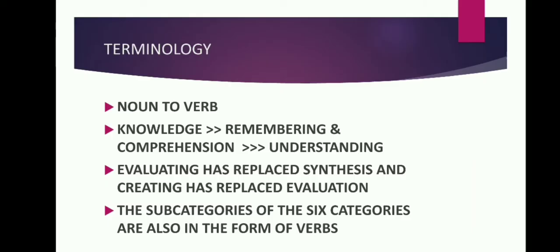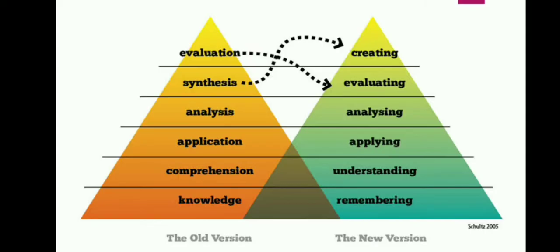The subcategories of the six categories are also in the form of verb. The six categories are: Knowledge, Comprehension, Application, Analysis, Synthesis, Evaluation — revised to: Remembering, Understanding, Applying, Analyzing, Evaluating, Creating. Knowledge level subcategories: Recall, Recognition — that is, recalling and recognizing.